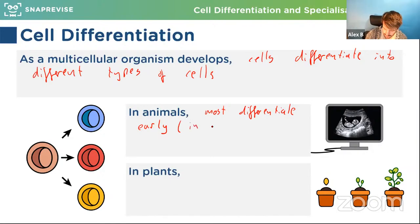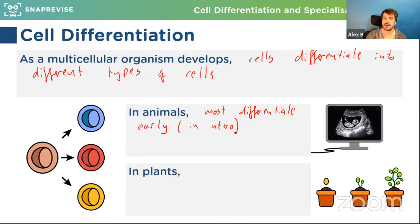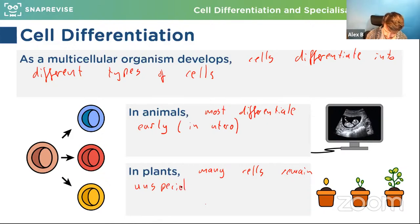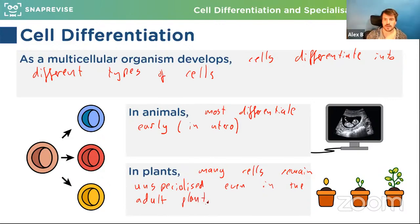Most differentiation in animals happens in utero — basically while you're growing in the uterus as a developing embryo or fetus. This is why certain tissues are not very good at healing themselves or growing in adults. In plants, however, many cells remain unspecialized even in the adult plant. We call that meristematic tissue — cells that grow in the meristem of the plants.